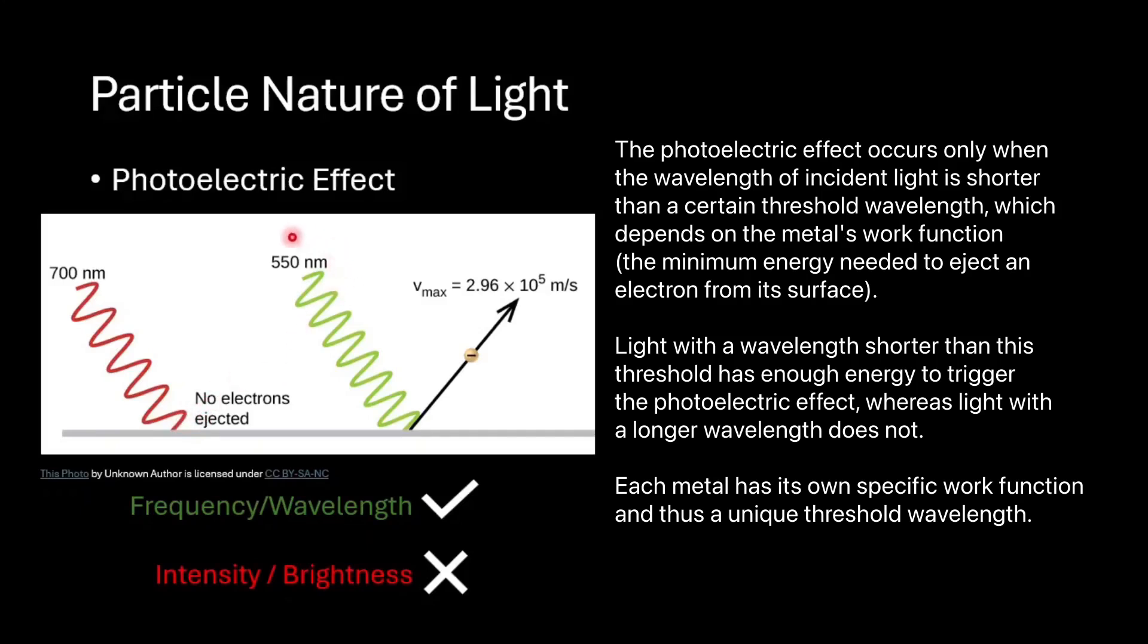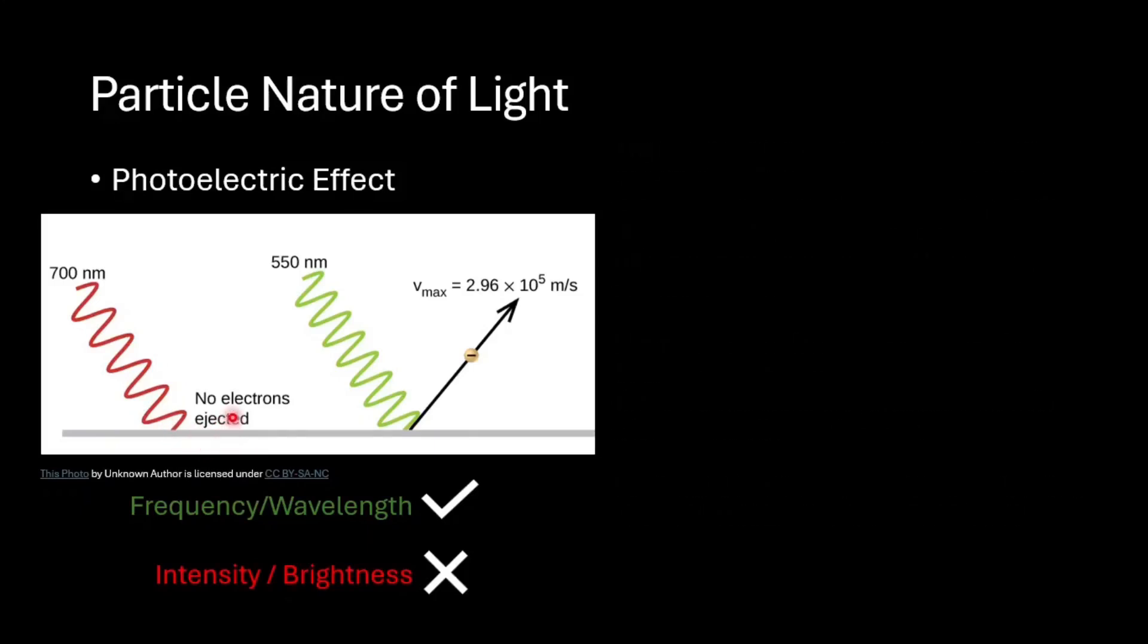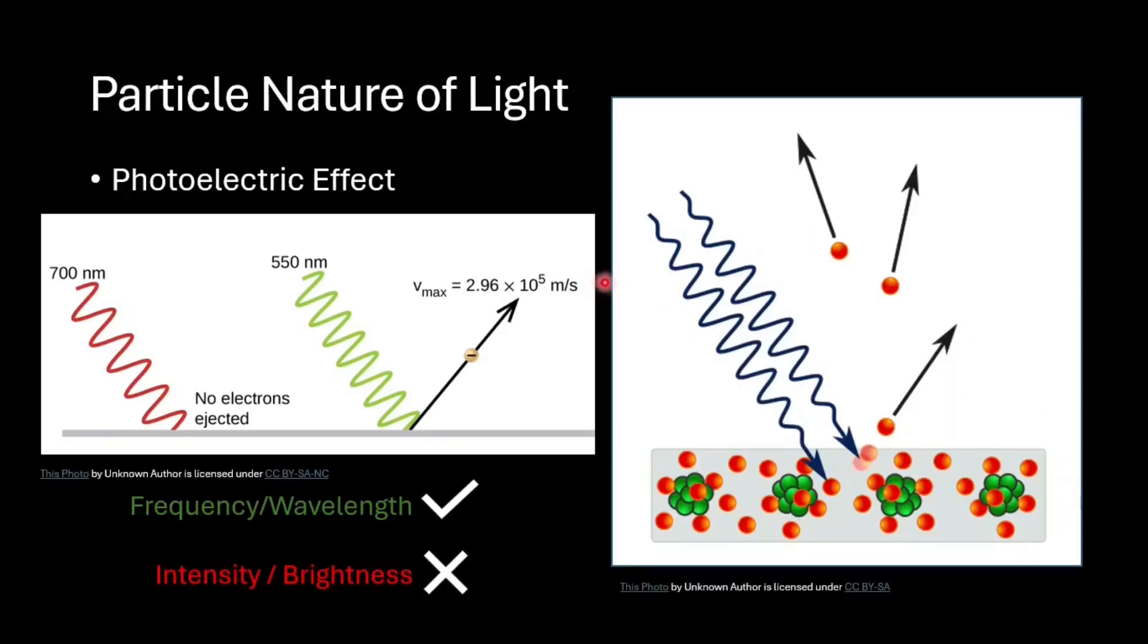This must mean that light must be made of tiny energy packets called photons. A single photon must have enough energy to knock out an electron. If it doesn't, no electrons are released no matter how many photons hit the surface or how long the light shines.